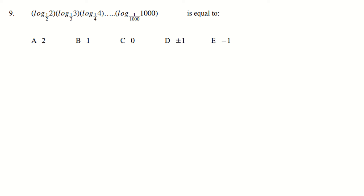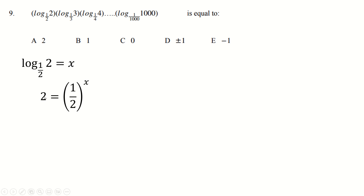Lovely — question number nine. Log to base a half of 2: if we just call that x, that means half to the power x equals 2. What do you have to raise half to the power of to get 2? Well it's minus 1, because you want to flip it over. But that's the case for all of these, because they're all just flipping over to get their counterpart. So actually all this is is 999 minus 1s multiplied together. That's an odd number, so the answer is going to be minus 1.